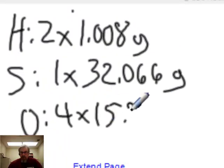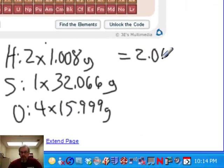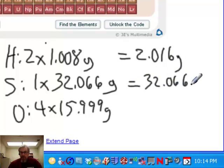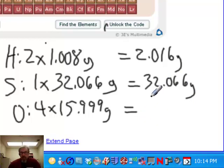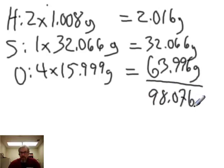So we multiply: 4 times 15.999 grams for oxygen. This gives us 2.016 grams total mass of hydrogen, 32.066 grams for sulfur (subscript of 1), and 4 times 15.999 equals 63.996 grams for oxygen. Adding all up, we get 98.076 grams — the total mass of one mole of H₂SO₄.